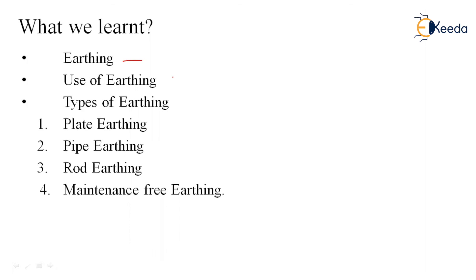Types of earthing are plate earthing, pipe earthing, and rod earthing. All three types follow somewhat the same procedure: dig a hole, place the item — a plate, pipe, or rod — fill with layers or mixtures of charcoal and salt, connect with copper wire, and maintain moisture. Maintenance is necessary, especially in summers. The fourth type is maintenance-free earthing: buy a product from the market, dig a pit, pour the compound, place the electrode, fill the remaining pit with compound, and you have maintenance-free earthing.